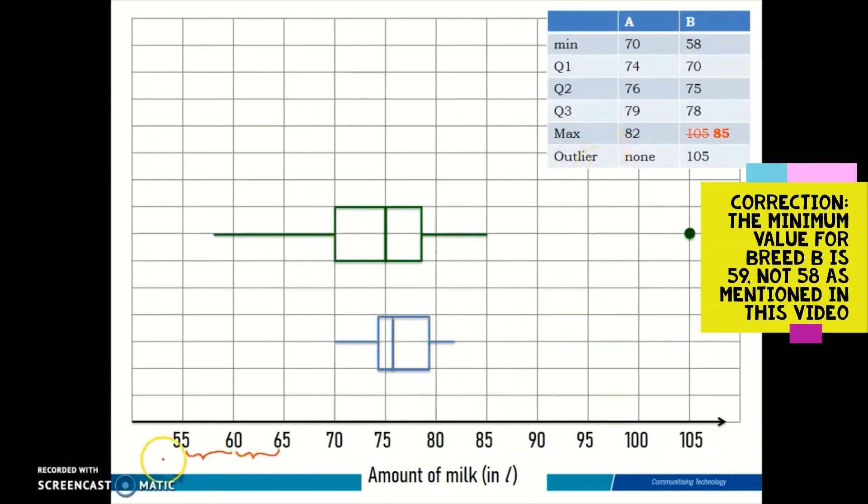Finally, you have to label your box plot. You need to label all the five number summary: minimum, Q1, Q2, Q3, maximum. Same goes to the other box plot: minimum, Q1, Q2, Q3, maximum, and not to forget the outlier as well.